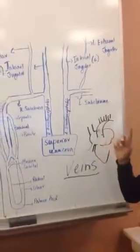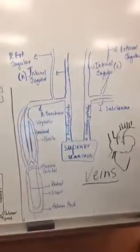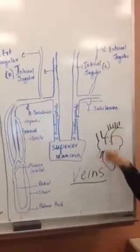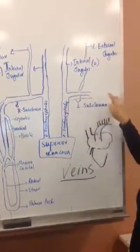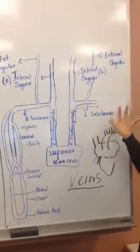Okay, so whenever you see the names being similar, that means they run beside one another. So you have the left subclavian, and then it'll go and form other veins. Let's forget that for a minute.